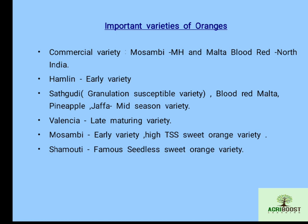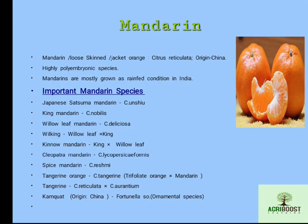The fourth important citrus group is mandarin, also called loose-skinned or jockey orange. The scientific name is Citrus reticulata and its origin is China. It is also a polyembryonic species. Mandarins are mostly grown under rain-fed conditions in India. Important species include Japanese Satsuma mandarin (Citrus unshiu), King mandarin (Citrus nobilis), willow leaf mandarin (Citrus deliciosa), and others.